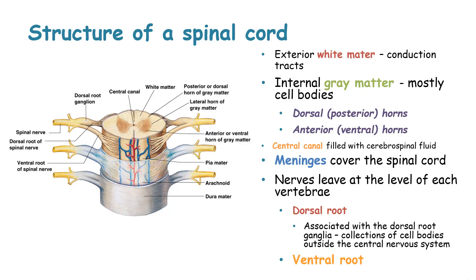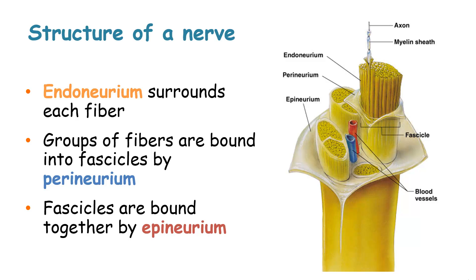The spinal nerves leave at the level of each vertebra. Looking at the structure of these nerves, the endoneurium surrounds each nerve fiber, and groups of fibers are bound into fascicles by what is known as the perineurium. These fascicles are then bound together by an epineurium.